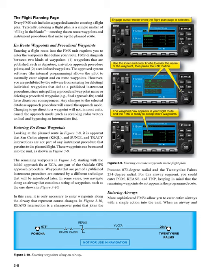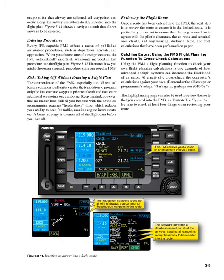Entering airways: more sophisticated FMSs allow you to enter entire airways with a single action into the unit. When an airway and end point for that airway are selected, all waypoints that occur along the airway are automatically inserted into the flight plan. Figure 3-11 shows a navigation unit that allows airways to be selected. Entering procedures: every IFR-capable FMS offers a menu of published instrument procedures, such as departures, arrivals, and approaches. When you choose one of these procedures, the FMS automatically inserts all waypoints included in that procedure into the flight plan. Figure 3-12 illustrates how you might choose an approach procedure using one popular FMS.